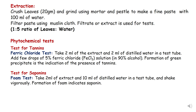For the saponin test, take 2 ml of the extract and add 10 ml of distilled water in a test tube, then shake vigorously. The formation of foam indicates saponin. Leave the test tube for 5 to 10 minutes, and if the foam persists, it indicates that saponins are present in the sample.